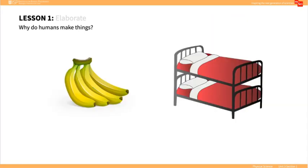Then use the natural versus engineered card set to show students pictures of different objects. Students should decide if the object is natural or engineered. Using a thumbs-up, thumbs-down strategy would be a great way to see what all students think fairly quickly. Then use evidence to support their claims. If the object is engineered, students should say why the item is useful. You may want to use turn-and-talks at certain points to allow all students to voice their thoughts.